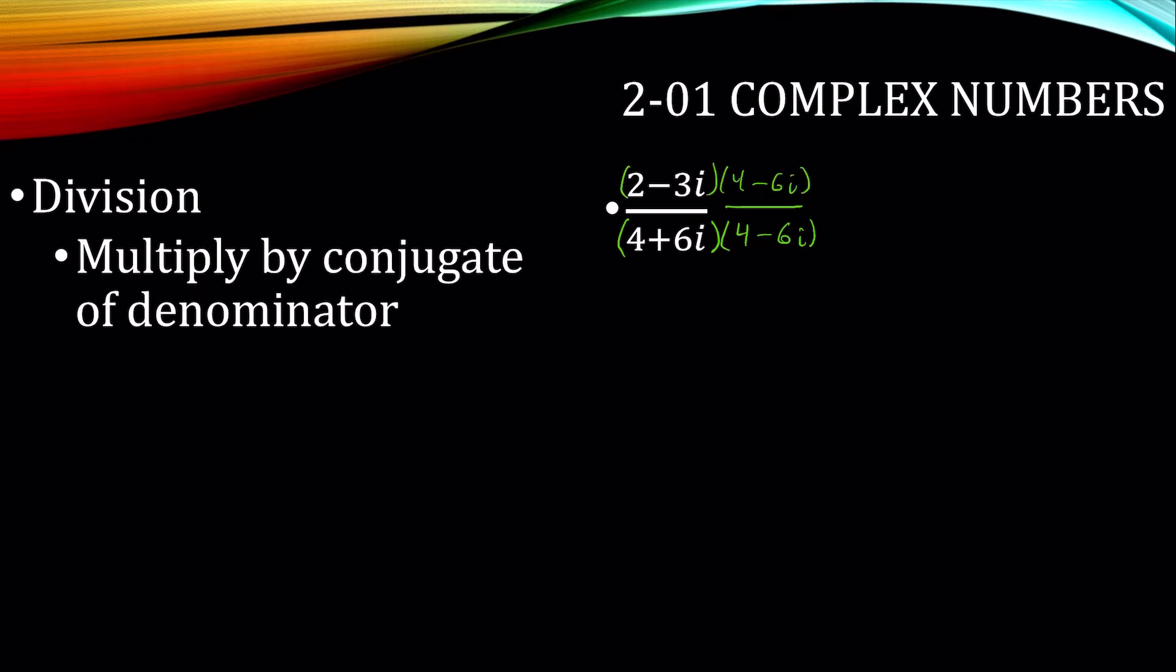That way, in the bottom, when I multiply them together, it will be just real. So on the top, 2 times 4, 2 times negative 6i, negative 3i times 4. And I become plus 18i squared. Oh wait, i squared becomes negative 1. The bottom, we have 4 times 4, negative 24i plus 24i minus 36i squared. Oh boy, i squared is negative 1.